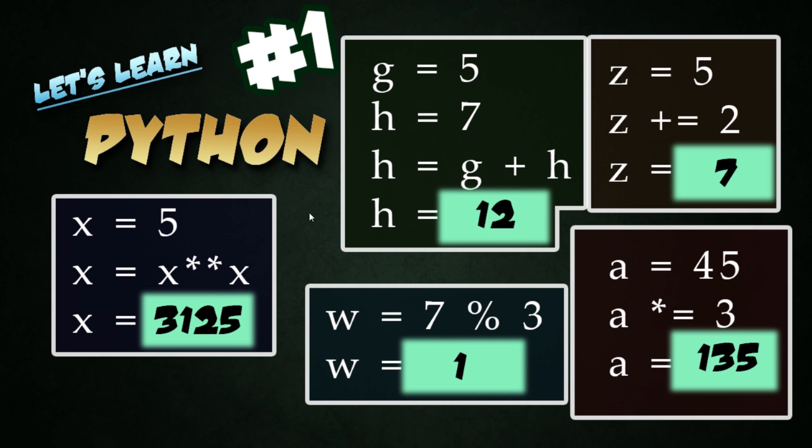Here is the first set of examples from lesson number one. On the left-hand side we have x equals 5, then x equals x times x, and this is just a really elaborate way of saying x to the power of x, and the answer that we'd get would be 3125. So if you punched in 4 or 3 or 2, that would be 2 to the power of 2, 3 to the power of 3, and so on.